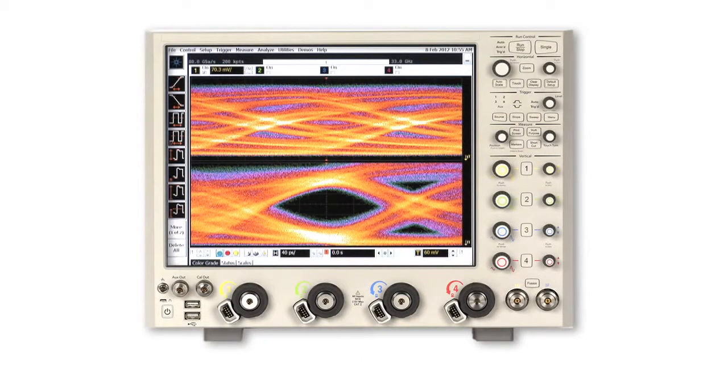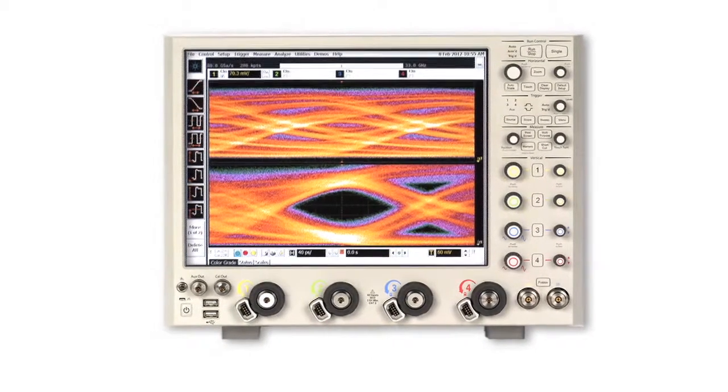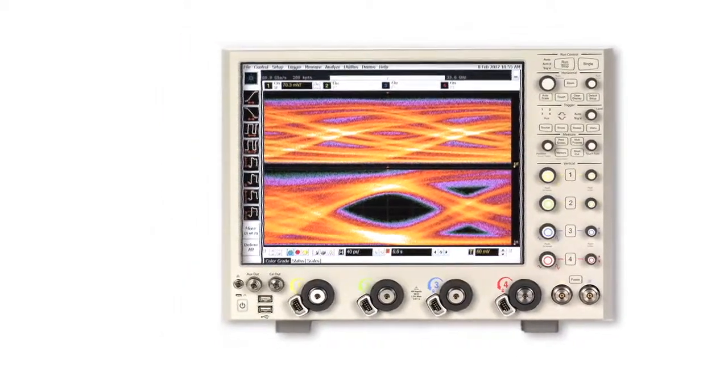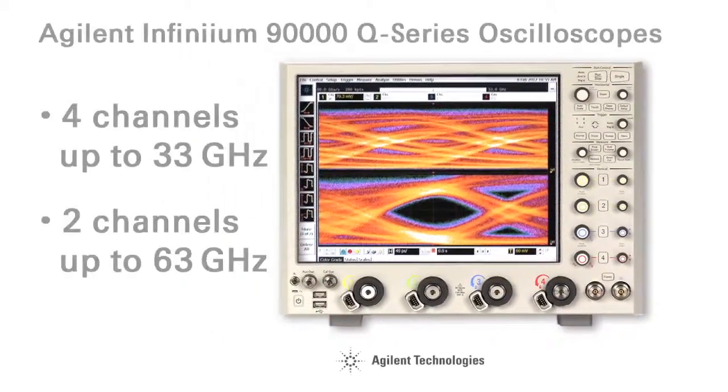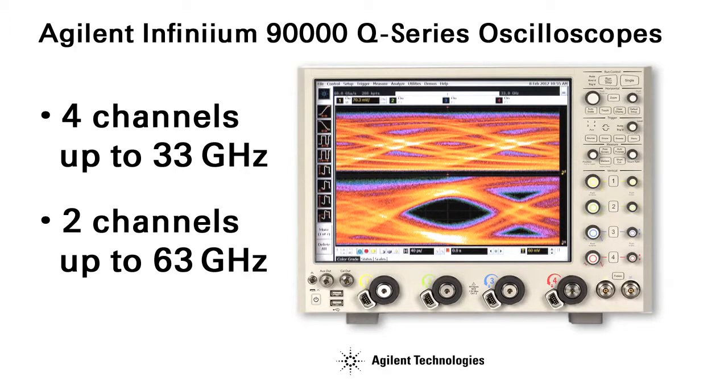Agilent's Infinium 90,000 Q-Series real-time oscilloscopes represent the absolute pinnacle of oscilloscope technology, boasting four channels at up to 33 GHz and two channels at up to 63 GHz.